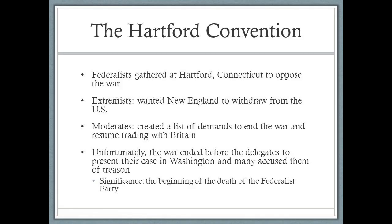Just before the war ended, the New England states threatened to secede from the Union, bitterly opposed to both the war and the Democratic-Republican government in Washington. Radical Federalists urged the Constitution be amended and, as a last resort, that secession be voted upon. A special convention was held in Hartford, Connecticut in December of 1814. Delegates rejected the radical calls for secession but adopted proposals including a two-thirds vote of both houses for future declarations of war or embargoes, and limiting the U.S. President to one term. Shortly after the convention dissolved, news came of Jackson's victory at New Orleans and the Treaty of Ghent, which ended criticism of the war and further weakened the Federalists by stamping them as unpatriotic.